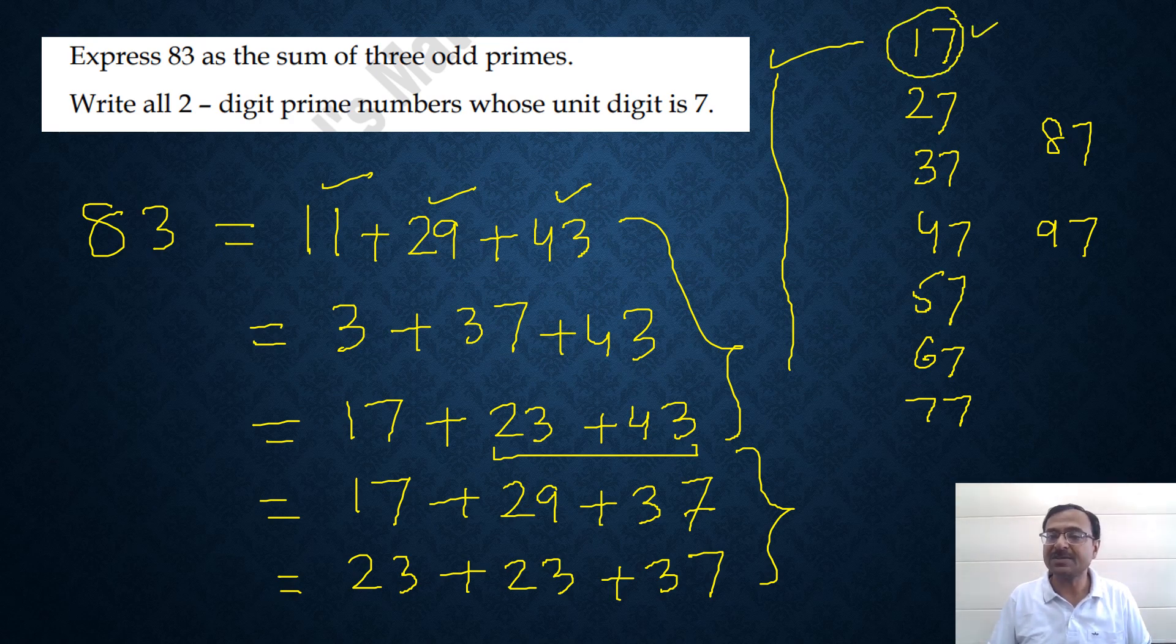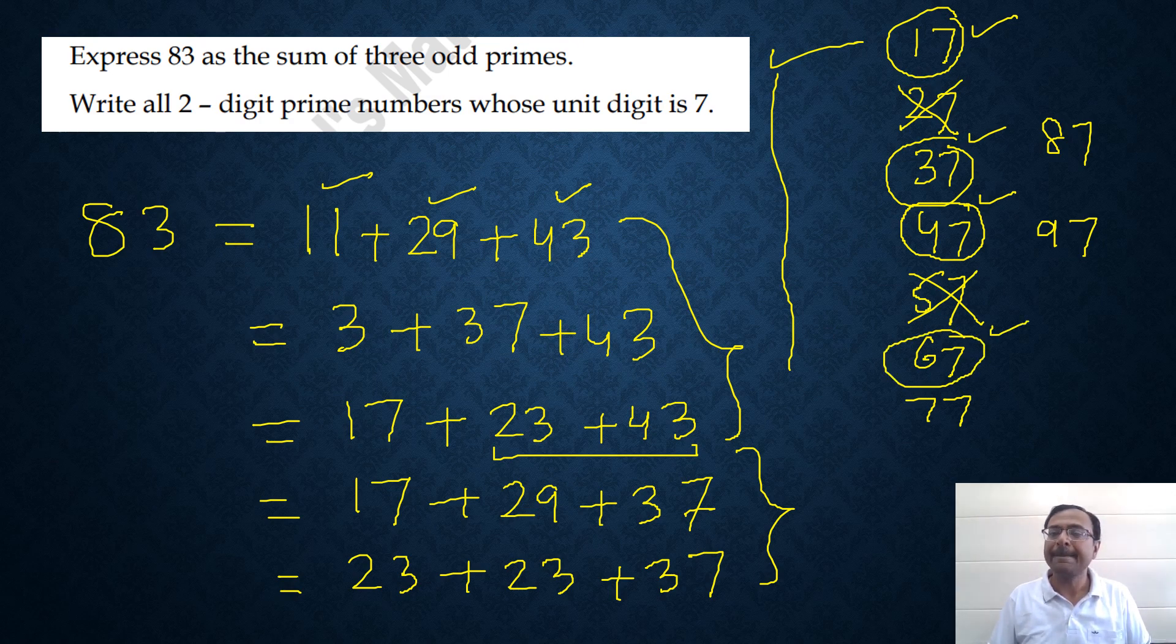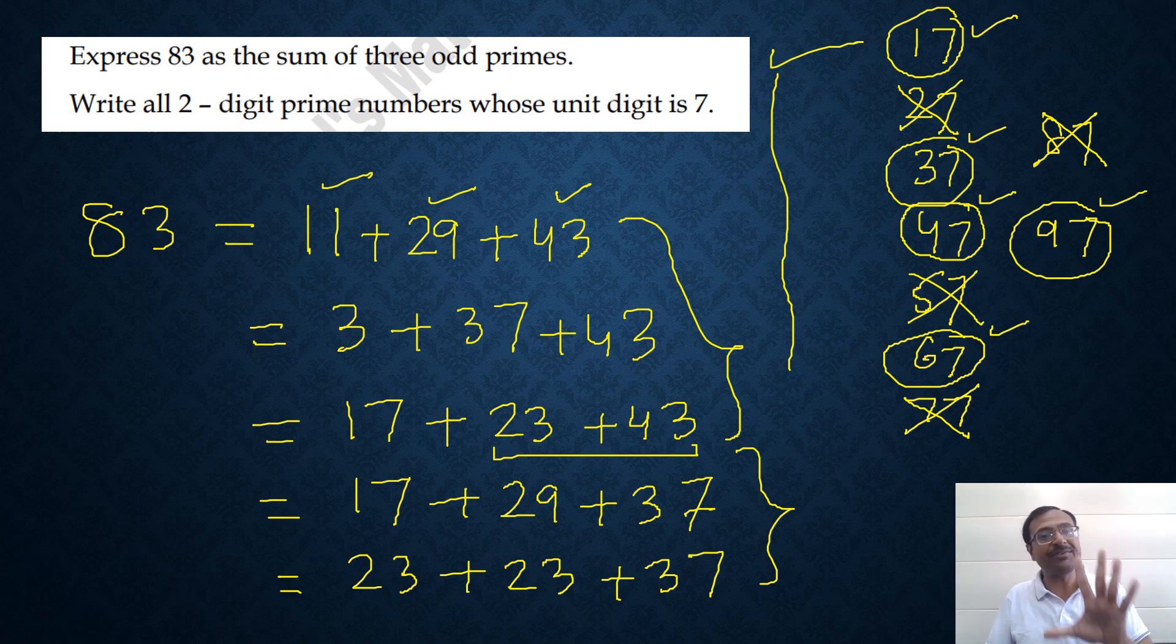17 - yes, it is prime. 27 is divisible by 3, so not prime. 37 - yes, obviously is prime. 47 again - yes, it is prime. And then 57 is divisible by 19 or divisible by 3 also, so it's not prime. 67 is prime. 77 is divisible by 11, not prime. 87 is divisible by 3, not prime. And then 97 is prime. So only five two-digit numbers ending in 7 are prime: 17, 37, 47, 67, and 97.